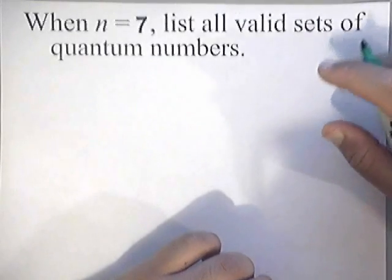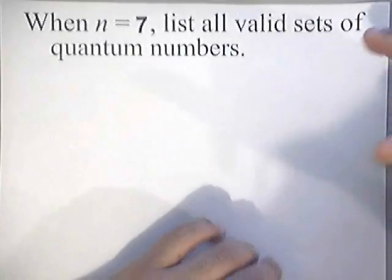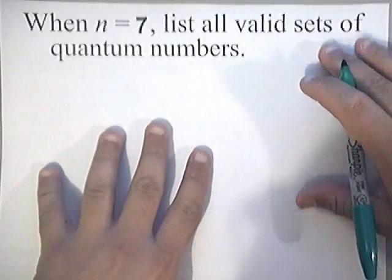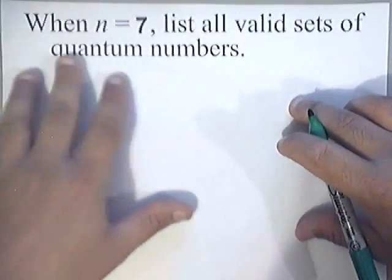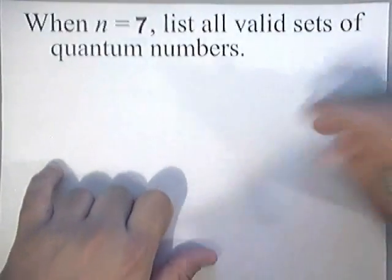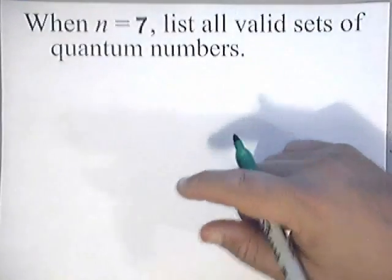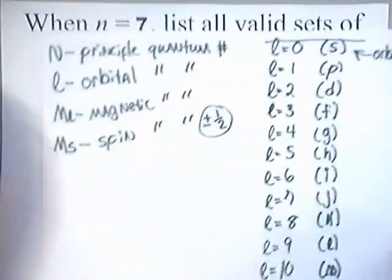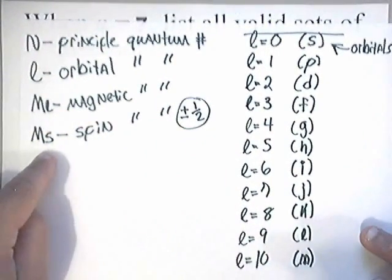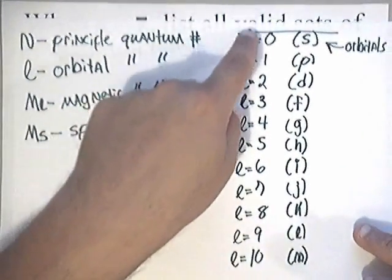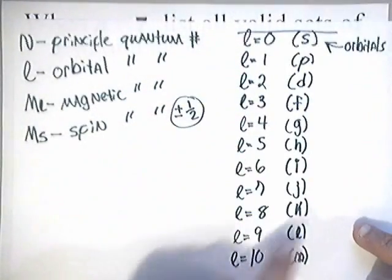In this video, I'm going to show you how to write all the valid sets of quantum numbers for n equals 7. This is actually kind of easy. If you watched the last video, you'll see how I explained the different types of quantum numbers and what the L values represent as far as the orbitals. So let's go ahead and get these calculated.